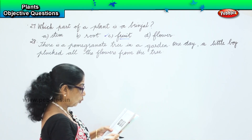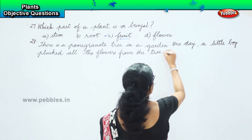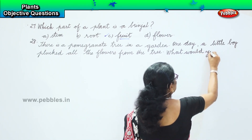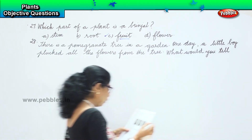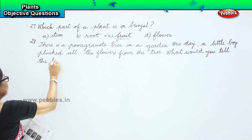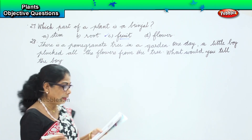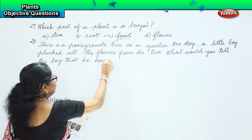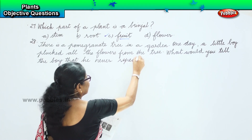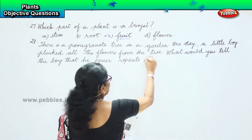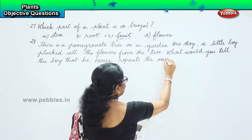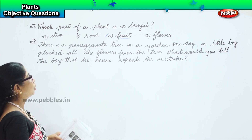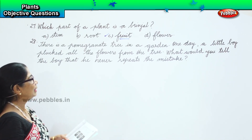What would you tell the boy, that he never repeats this mistake? What would you tell the boy that he never repeats the mistake? There is a pomegranate tree in the garden. One day a little boy plucked all the flowers from the tree. What would you tell the boy that he never repeats the mistake?